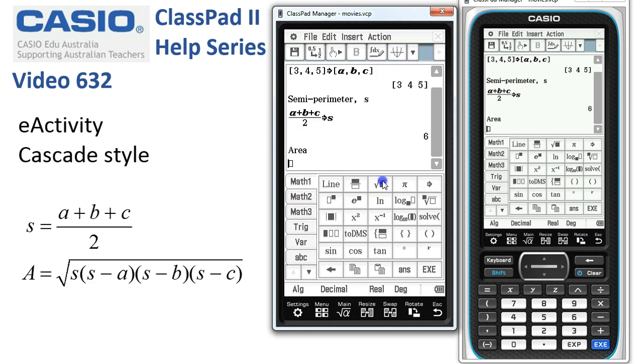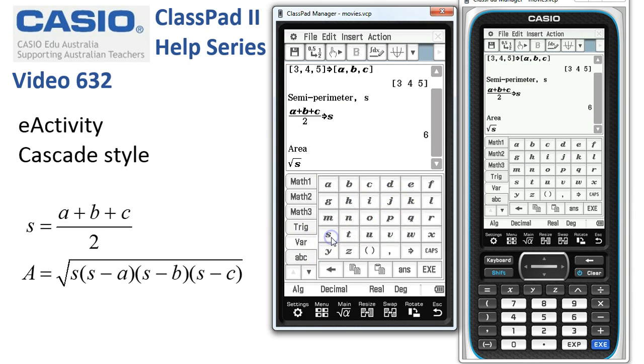We head to math1. We want the square root of variable S for the semi-perimeter. There's a set of brackets here if you're on the latest operating system. We'll put in three sets of brackets and I'm going to tap back in between each one. S minus A in the first bracket, S minus B in the second bracket, and in the third bracket, S minus C. This is basically Heron's formula that we've got over here. Now when I press Execute, we've got a result of six.